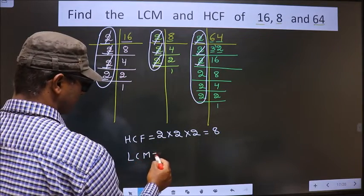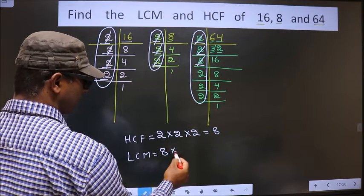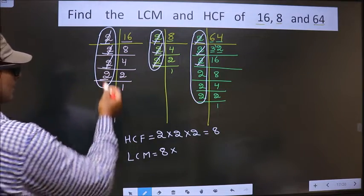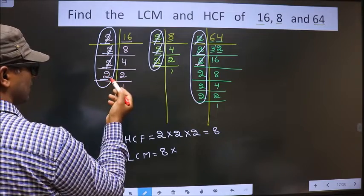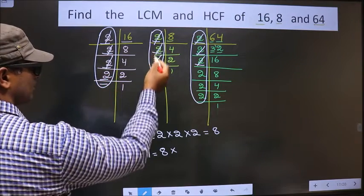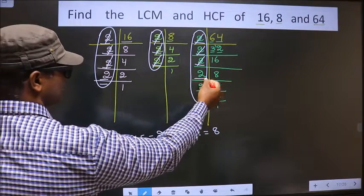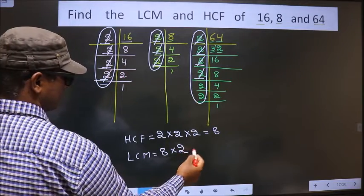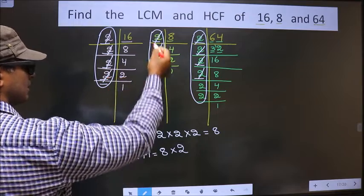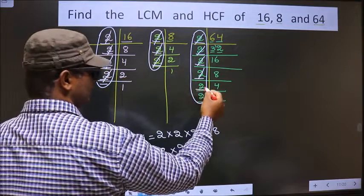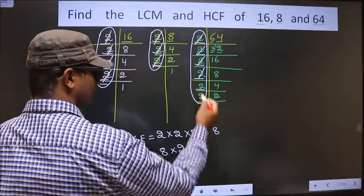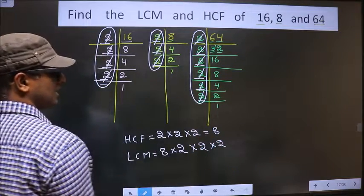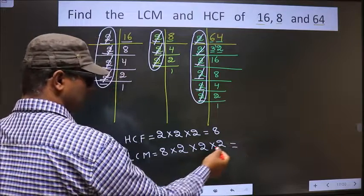Now for the LCM — to the HCF, we multiply by the remaining numbers that are not cut. Here the number which is not cut is 2. Here all numbers are cut. Do we have 2 here? Yes. Cut these two 2s. All numbers are cut here and here. Here this 2 is left out, so multiply by 2. This 2 is also left out, so multiply by 2 again. Now all the numbers are cut. Our LCM is found by multiplying all these.